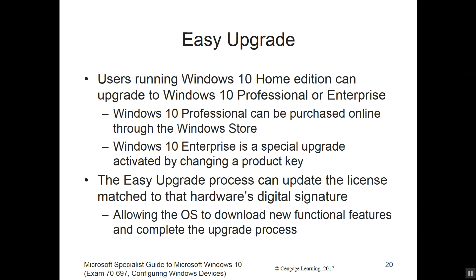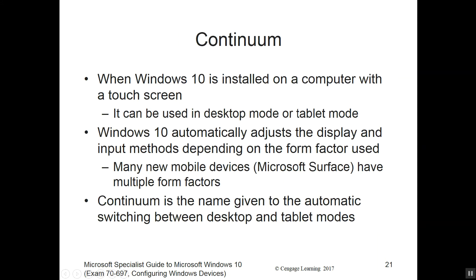It's easy to upgrade from Windows 8, 8.1 up to Win 10 — the license just ties right in. Windows Continuum means that when Windows 10 is installed on a computer with a touch screen, it can be used in desktop mode or tablet mode, allowing us to switch how we're interacting with the device.